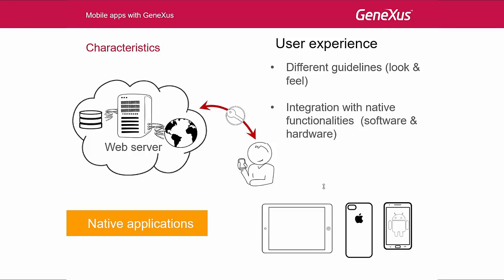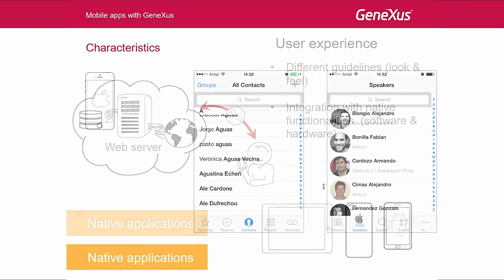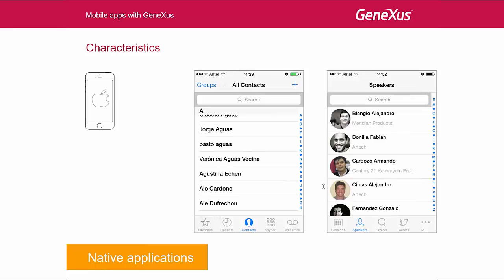For example, we want them integrated with the device camera, with the program to make phone calls, with the GPS, and so on. Users will require their experience with the apps on their device to be consistent with the rest of their experience using the other native applications running on that device. Therefore, those applications developed for smartphones and tablets must always be native apps. For example, on an iPhone, to the left of the screen, we see the native contacts app of the device, which has an action bar at the top.